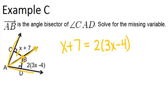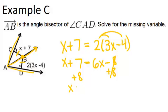So we can set up the equation and solve for x. The first thing to do is to distribute the two, and you get 6x minus 8. Keep going by adding 8 to both sides, and you get x plus 15 equals 6x. Minus x, and you have 15 equals 5x. So now I can see that our answer is x equals 3.